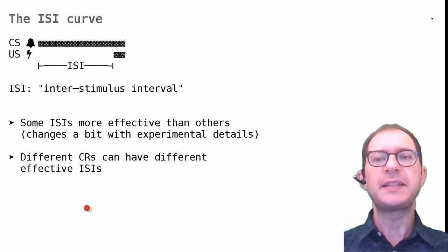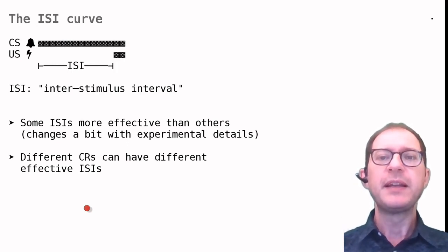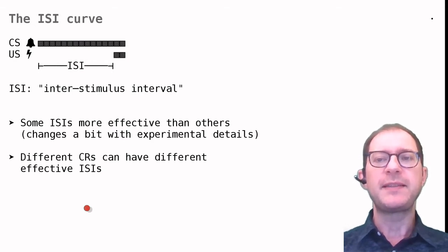In the previous slide, we said that the time between the CS and US is called the Interstimulus Interval, or ISI for short. In delay and trace conditioning, we can change the ISI and see how effective conditioning is.